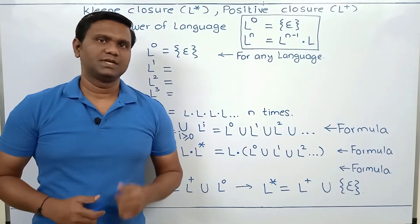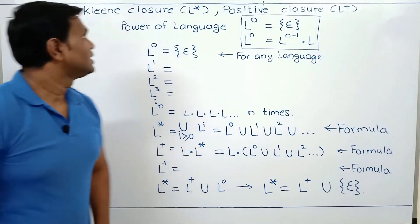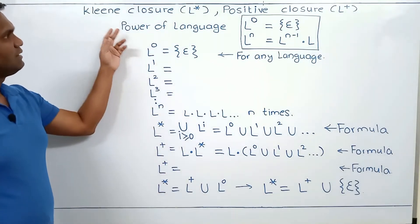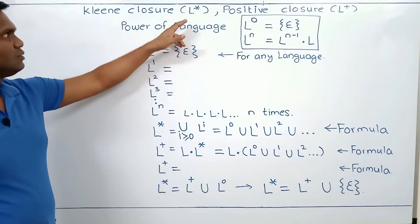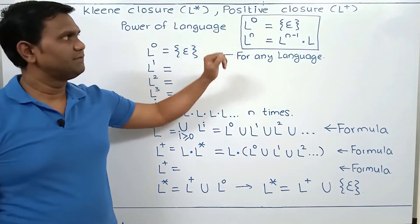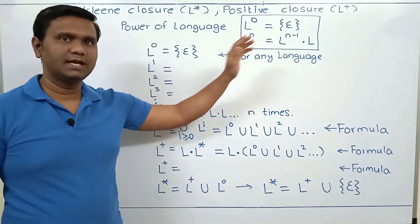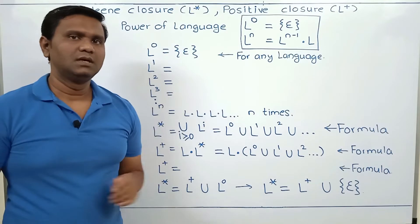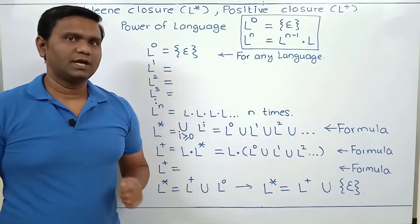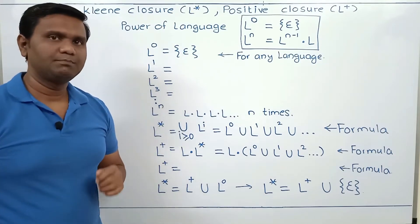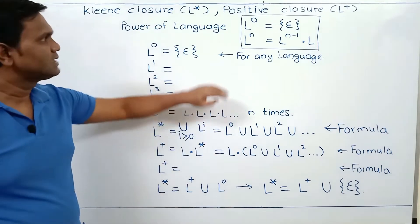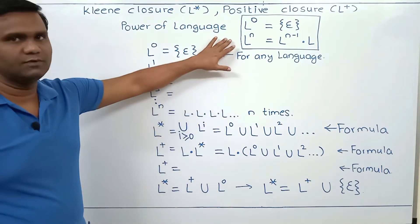Let's start with the next operation. Kleene closure of a language is denoted as L star and positive closure of a language is denoted as L plus. Now to calculate L star or L plus, first we need to calculate the power of the language, and it is calculated using this formula.